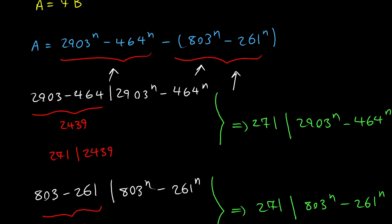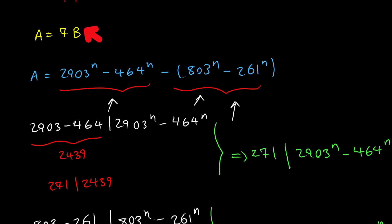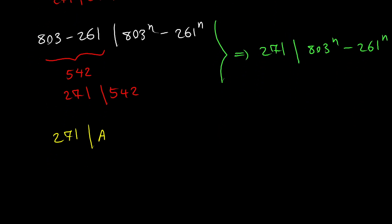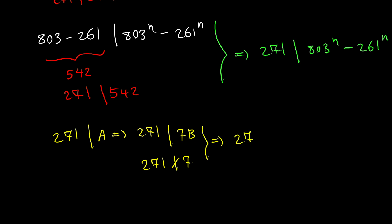Now we already know that a equals 7 times b. So we can say that 271 divides 7 times b. It is obvious that 271 does not divide 7, therefore 271 must divide b. That means there has to be an integer c where b equals 271 times c.